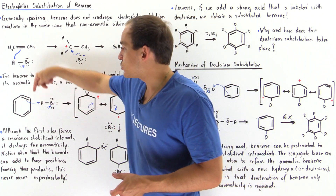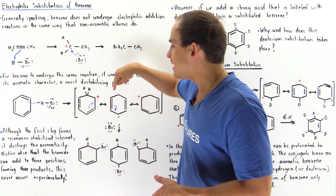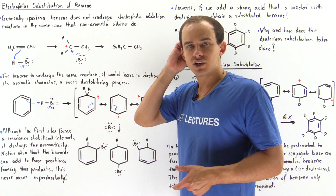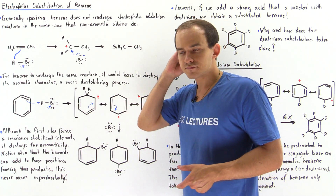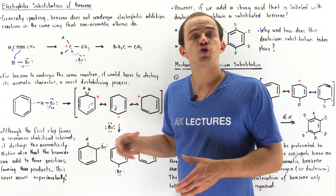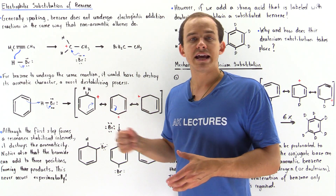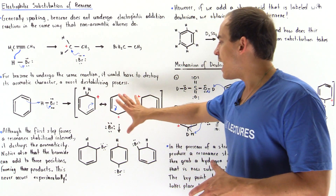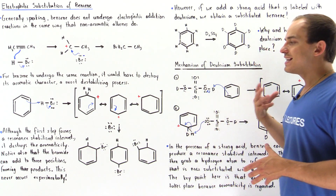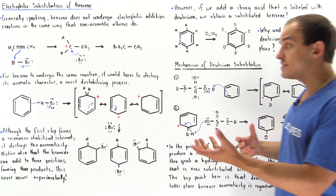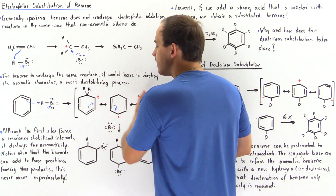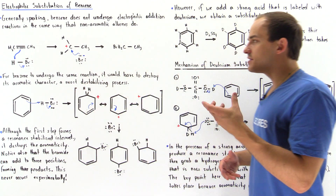The H ends up on one carbon and the positive charge falls onto the adjacent carbon. Because we have two remaining pi bonds, there is resonance stabilization. Three possible resonance-stabilized forms can exist, and this is of course a stabilizing process.